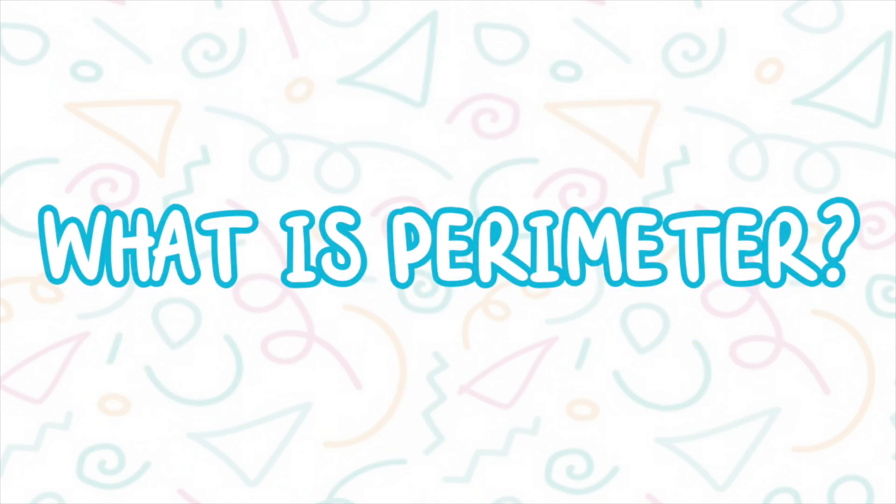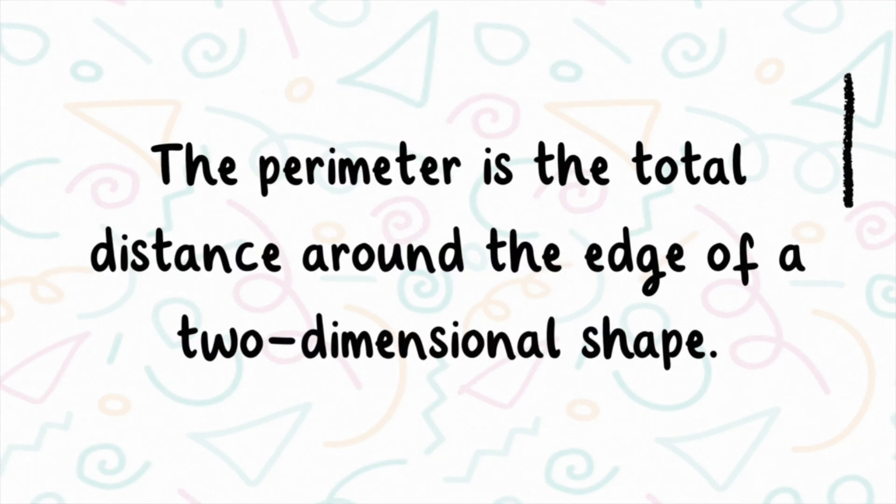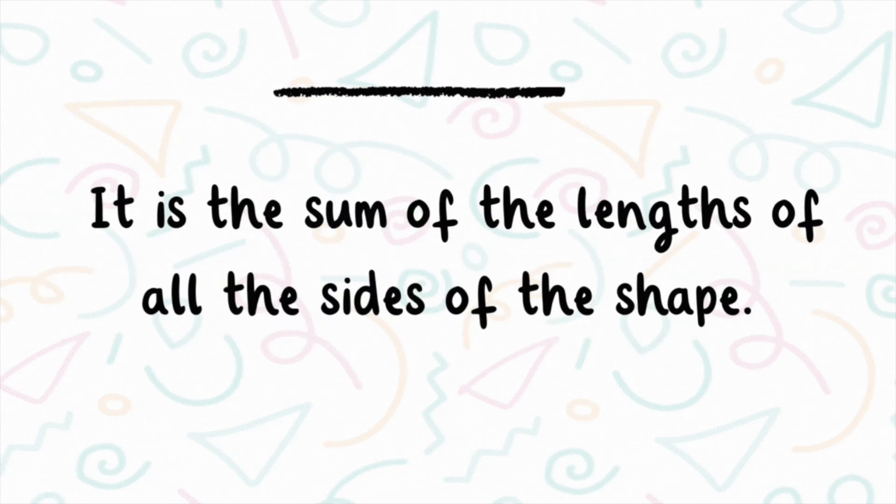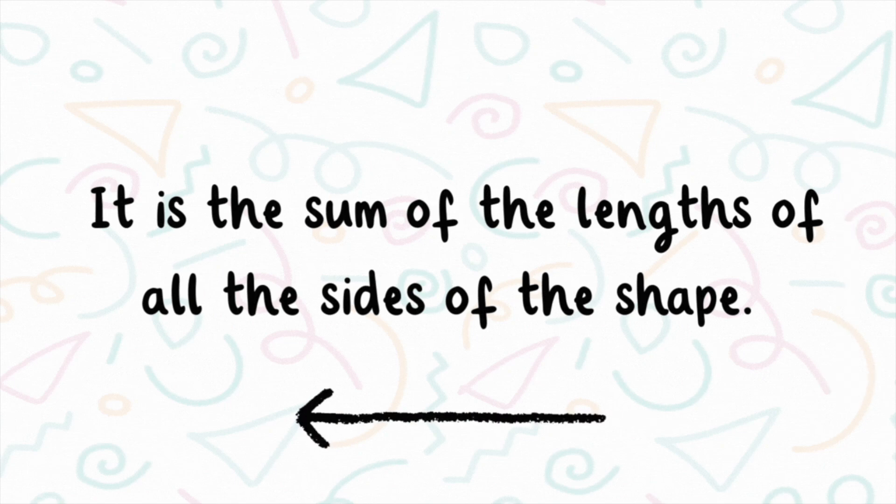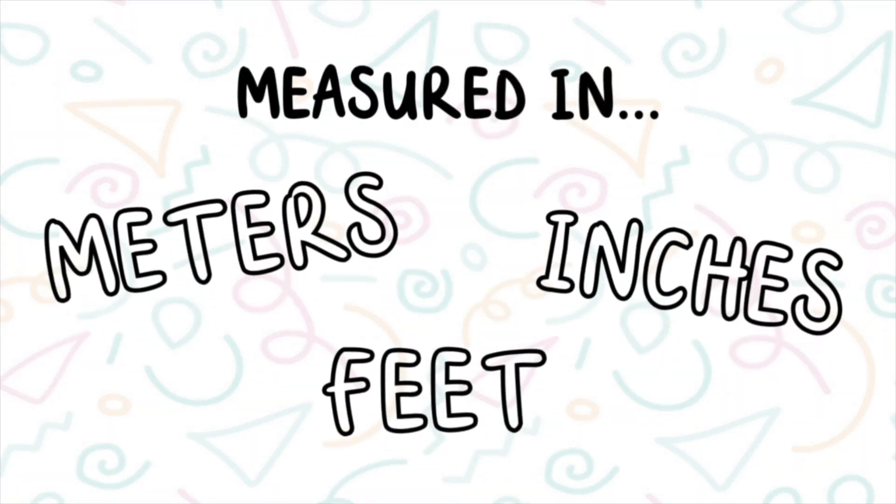What is perimeter? The perimeter is the total distance around the edge of a two-dimensional shape. It is the sum of the lengths of all the sides of the shape. It's measured in linear units such as meters, feet, or inches.